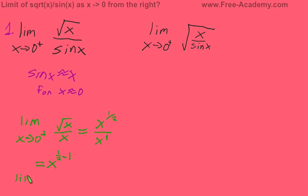So this will give you the limit as x approaches 0 from the positive side of x to the negative 1/2, which is 1 over the square root of x.